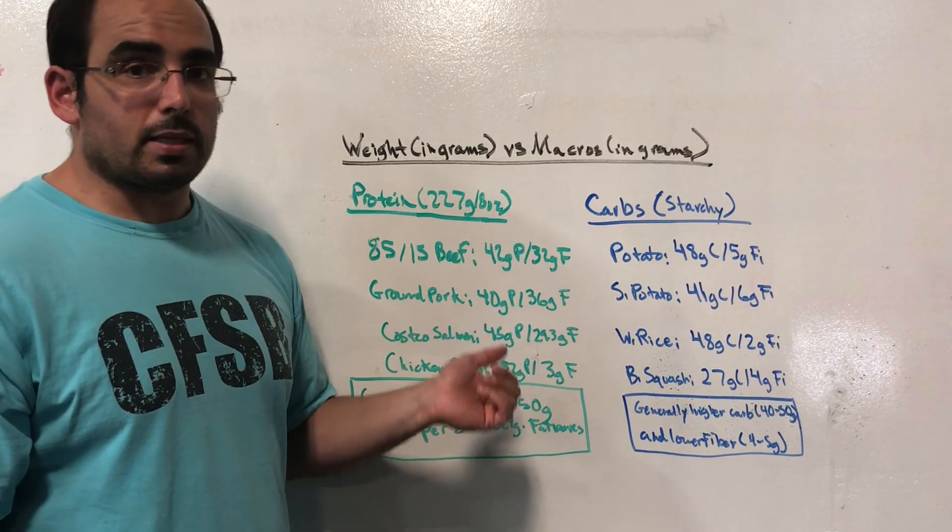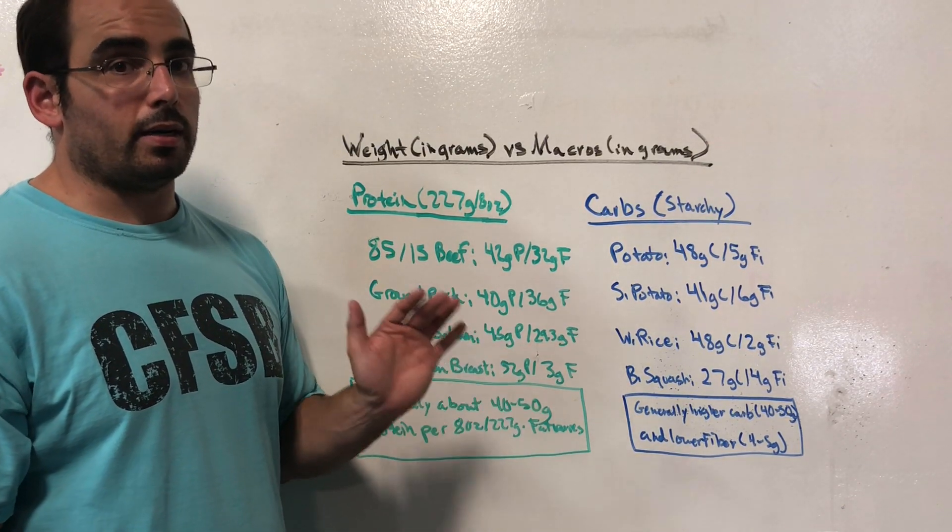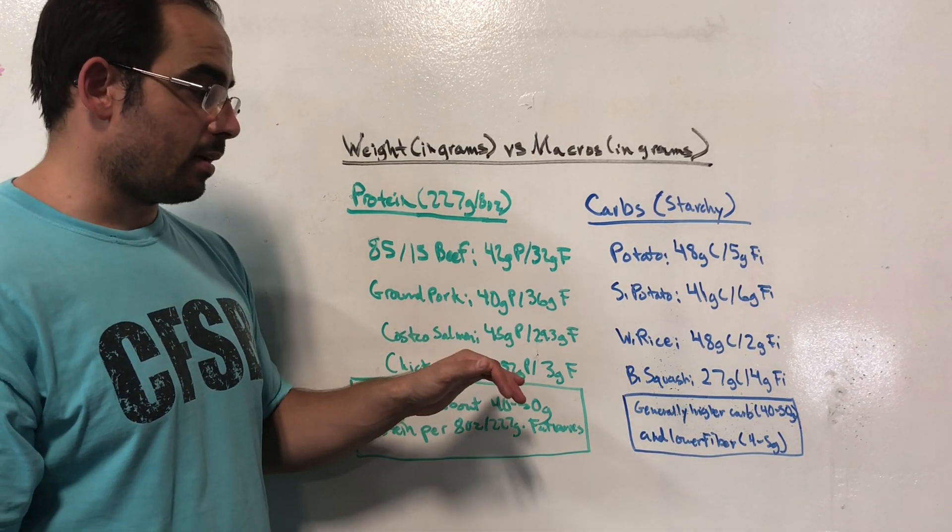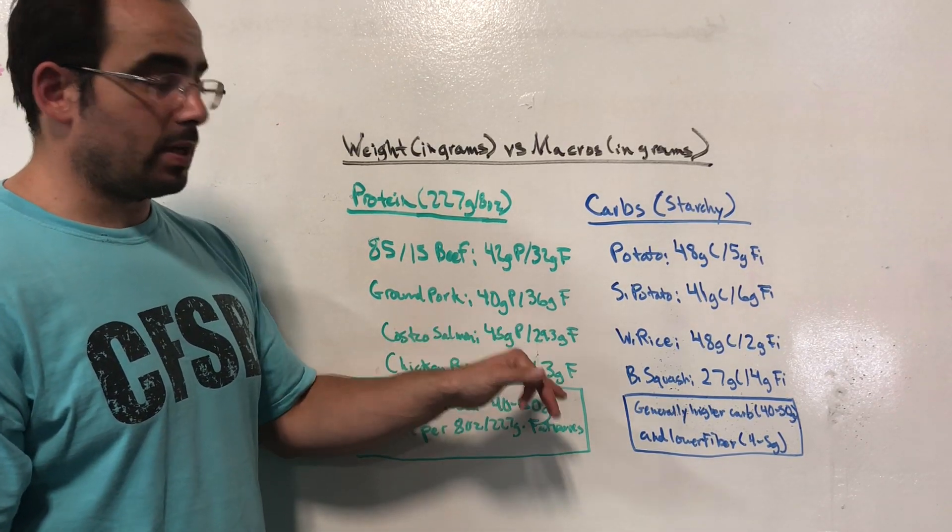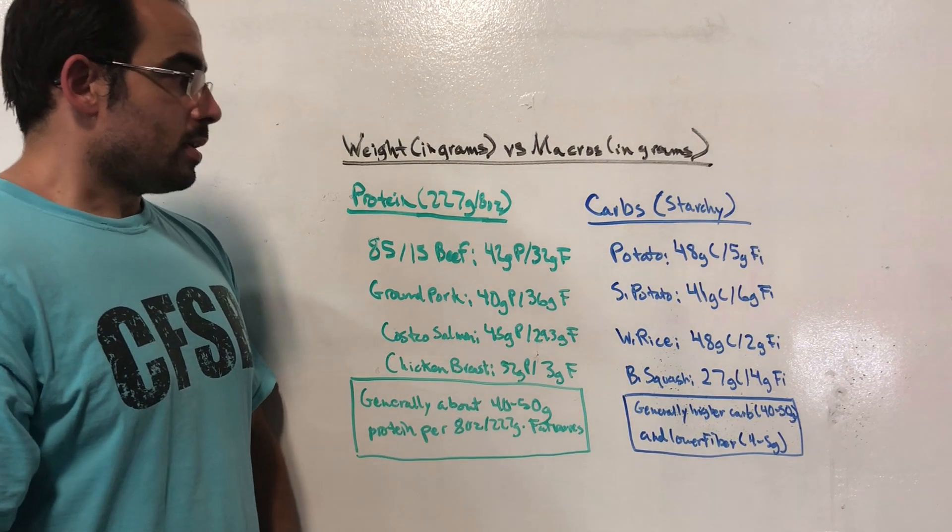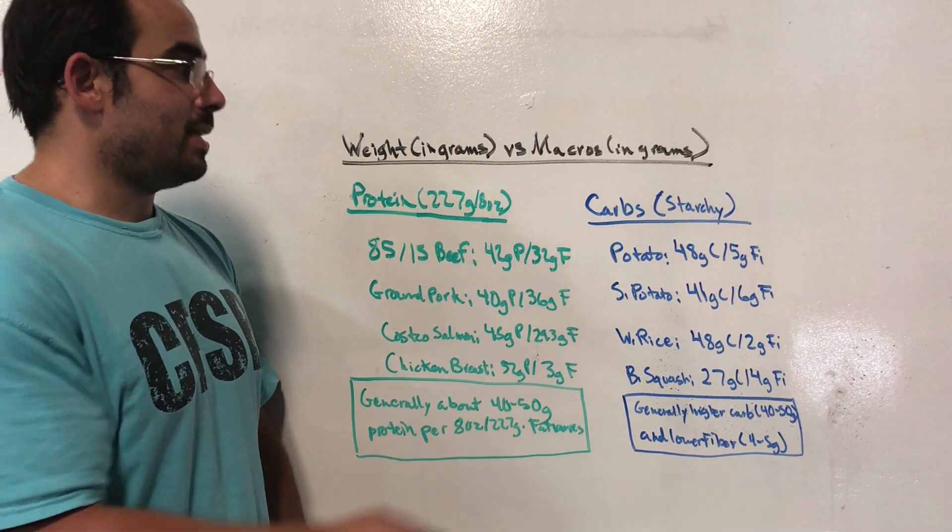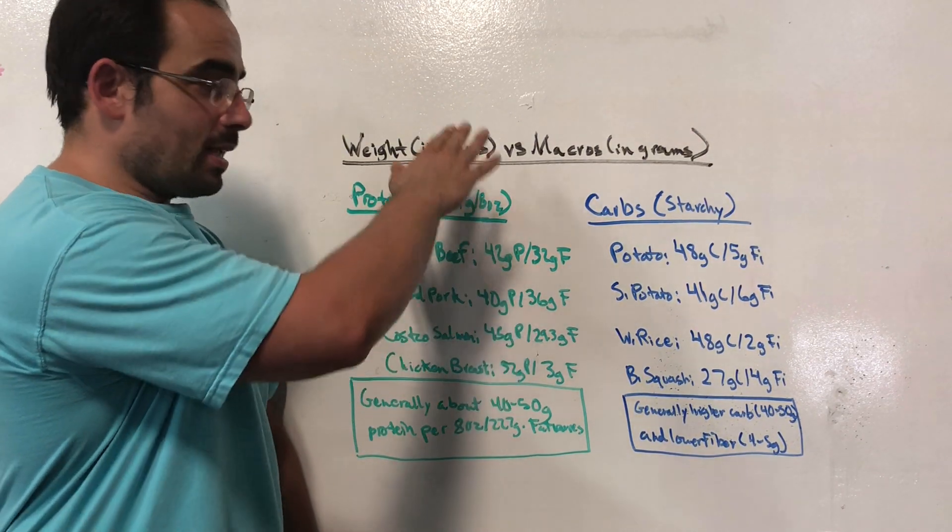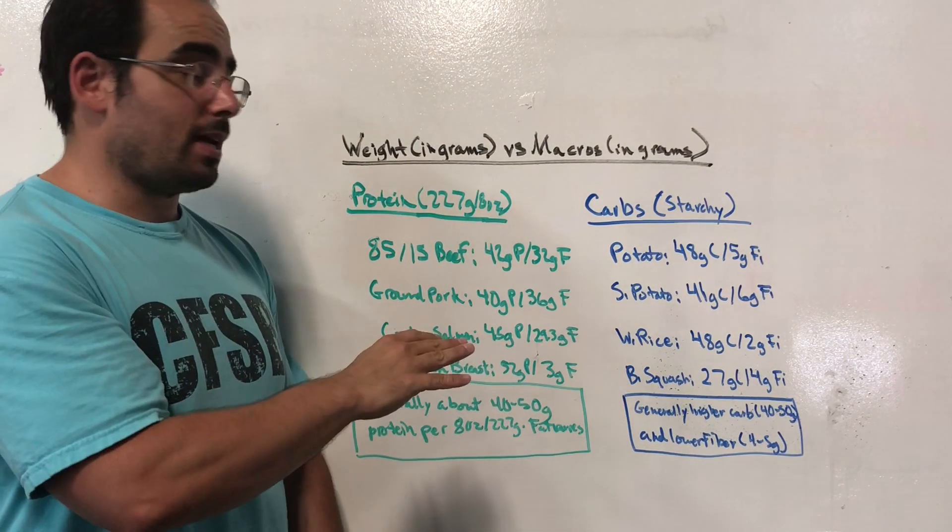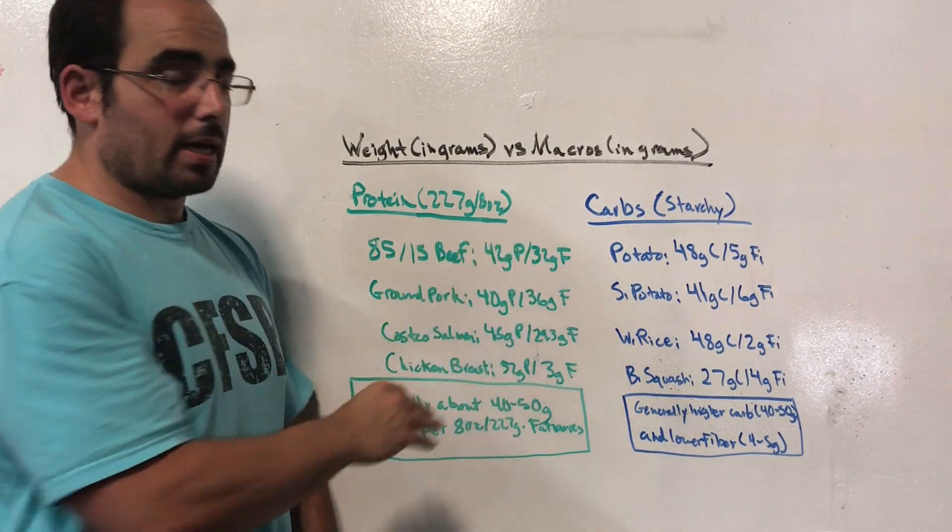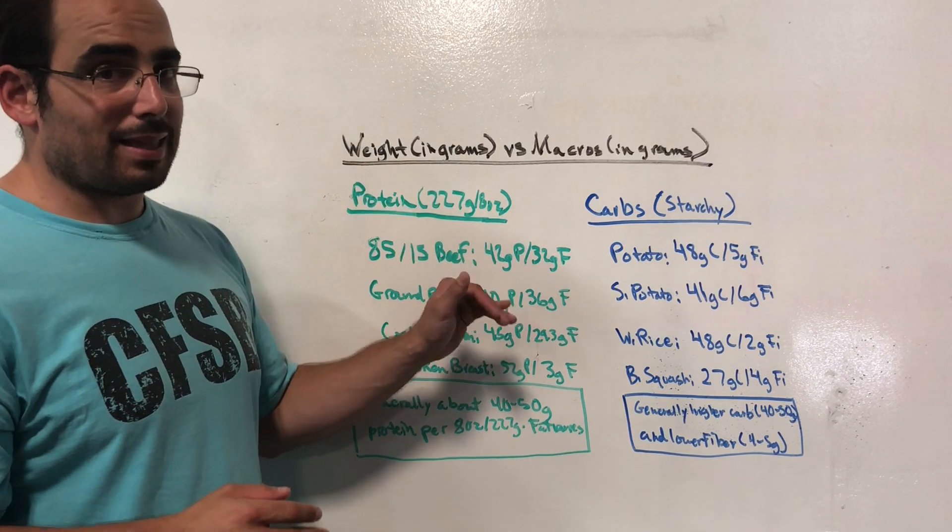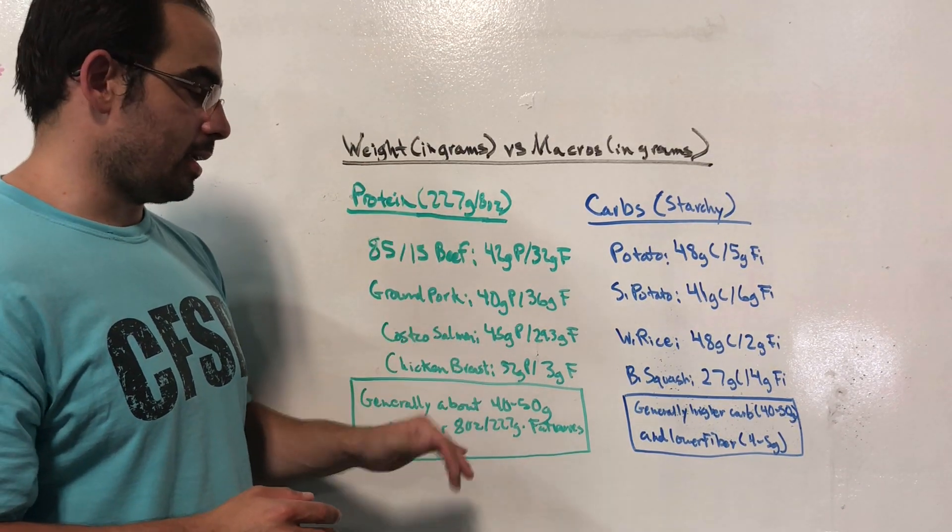And then chicken breast. Chicken breast is one of the few examples where you're just not going to have that much fat, barely any at all. 52 grams of protein and three grams of fat. So again, as you can see, the weight of the food is the same for all of these. It's the exact same, but the amount of protein and fat differs. So the weight is not the same as the protein and the fat in it.